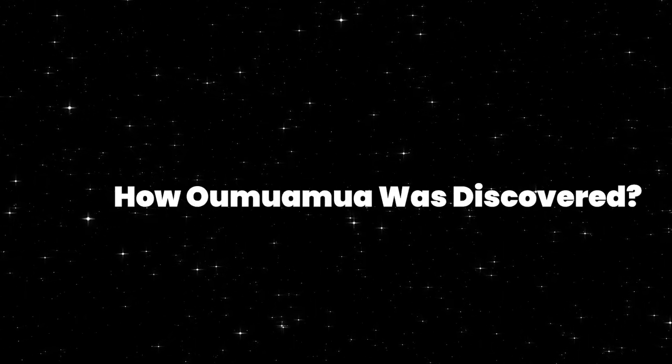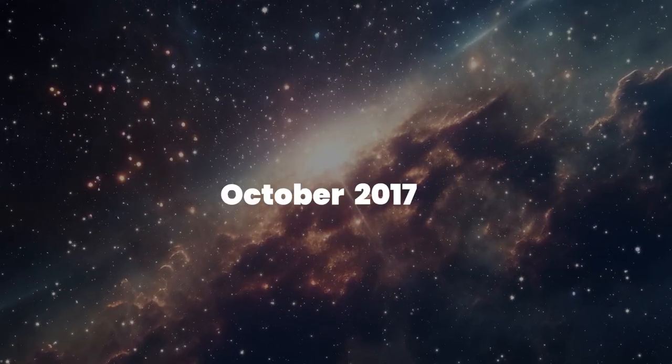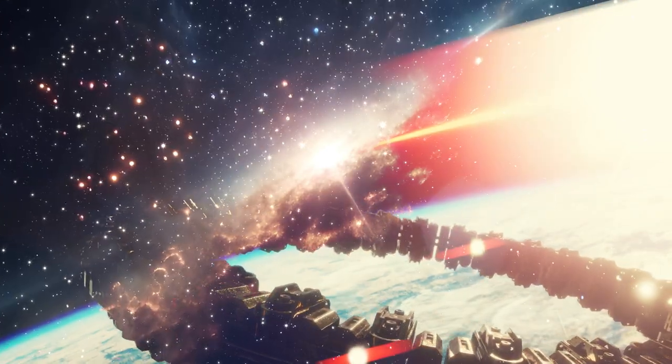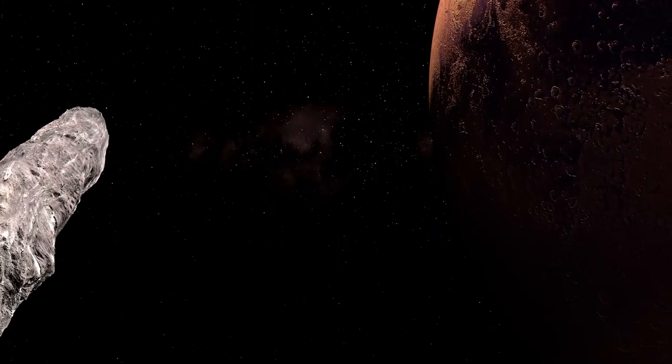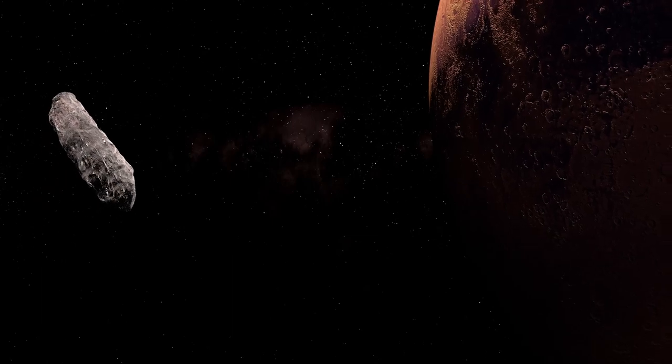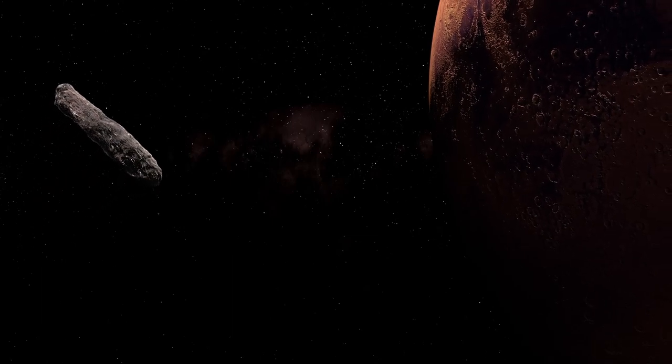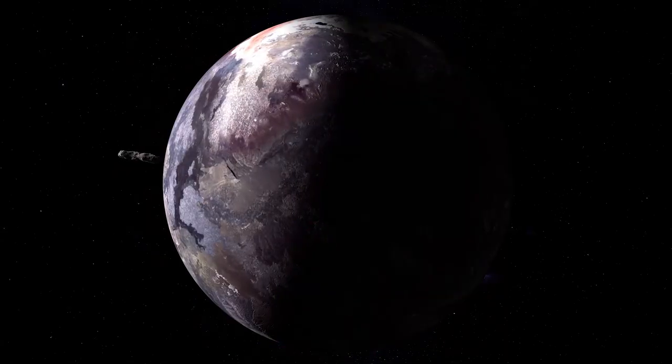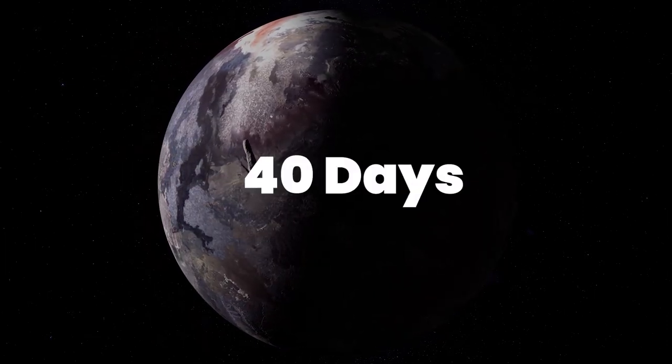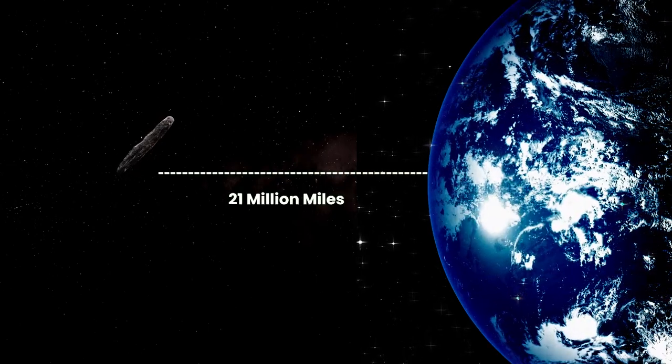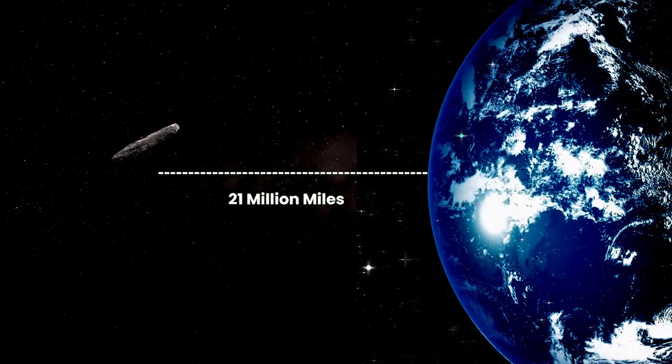How was Oumuamua discovered? In October 2017, the cosmic stage was set for a spectacular discovery. Oumuamua, a visitor from beyond our solar system, made its grand entrance. But here's the cosmic twist: it had been journeying through space for 40 days before we even noticed it, and it was a staggering 21 million miles away from our dear Earth.